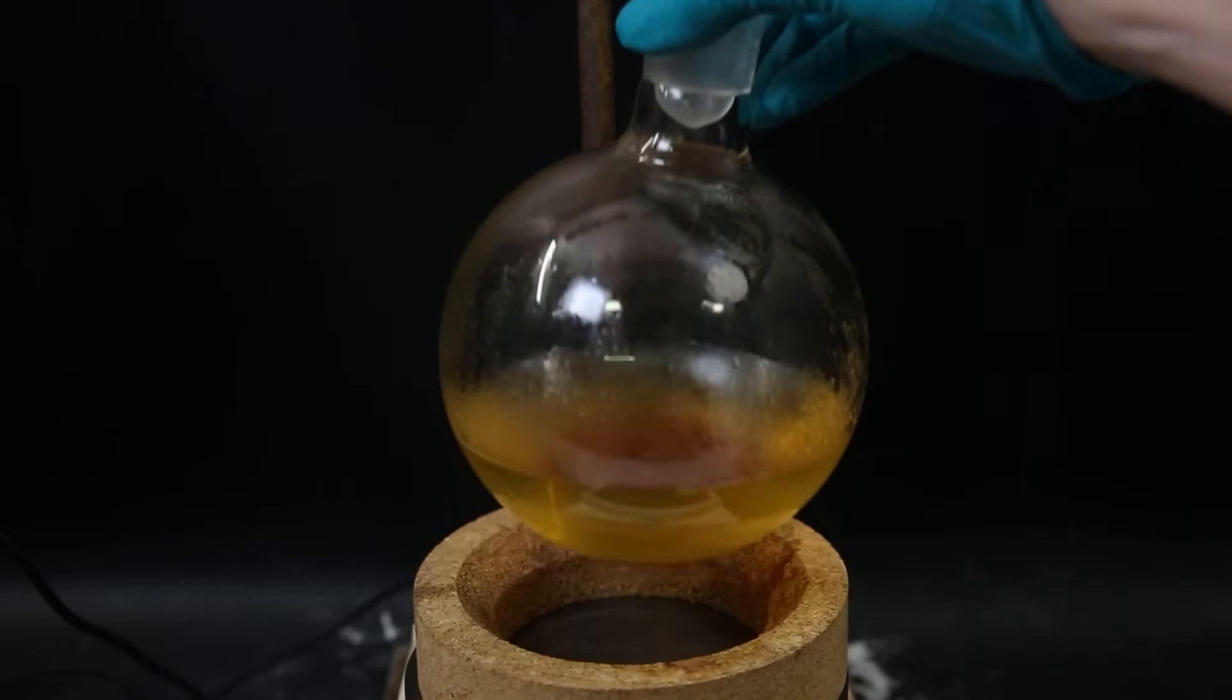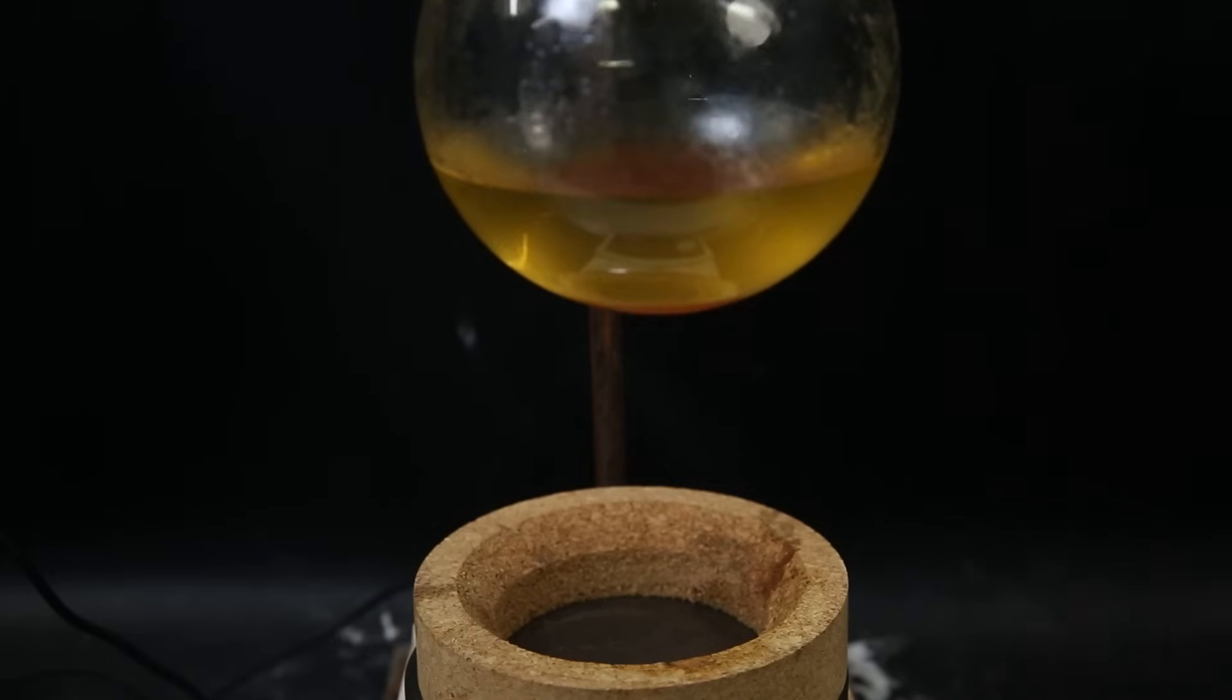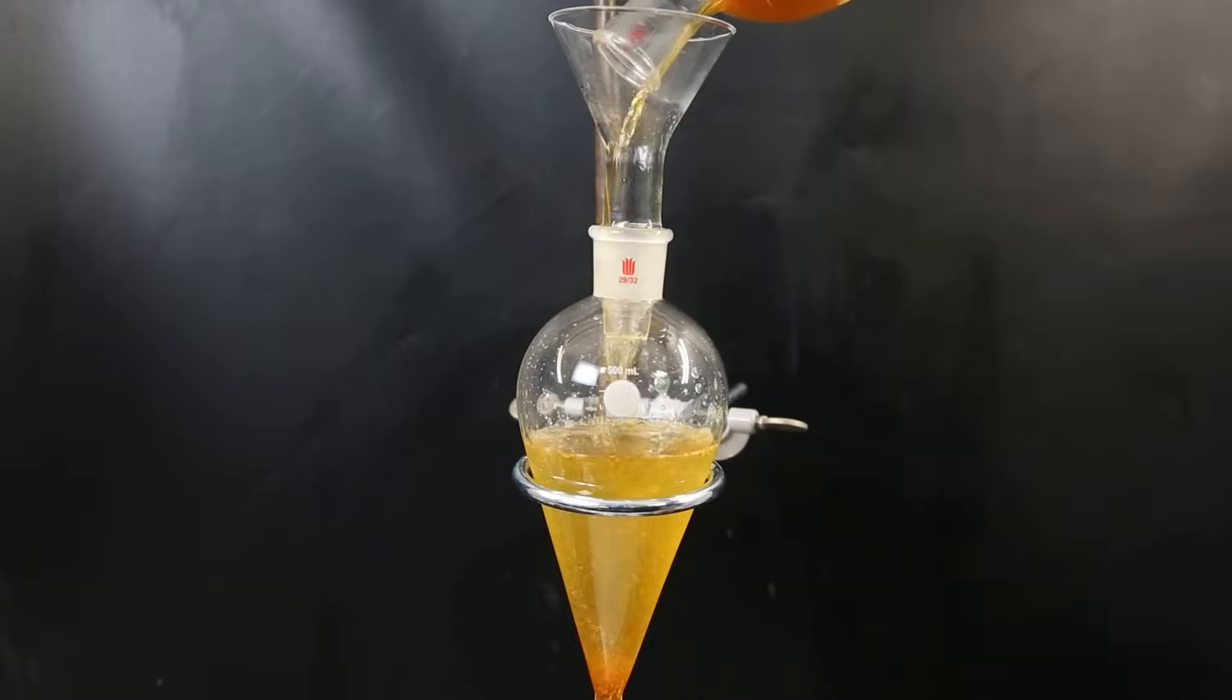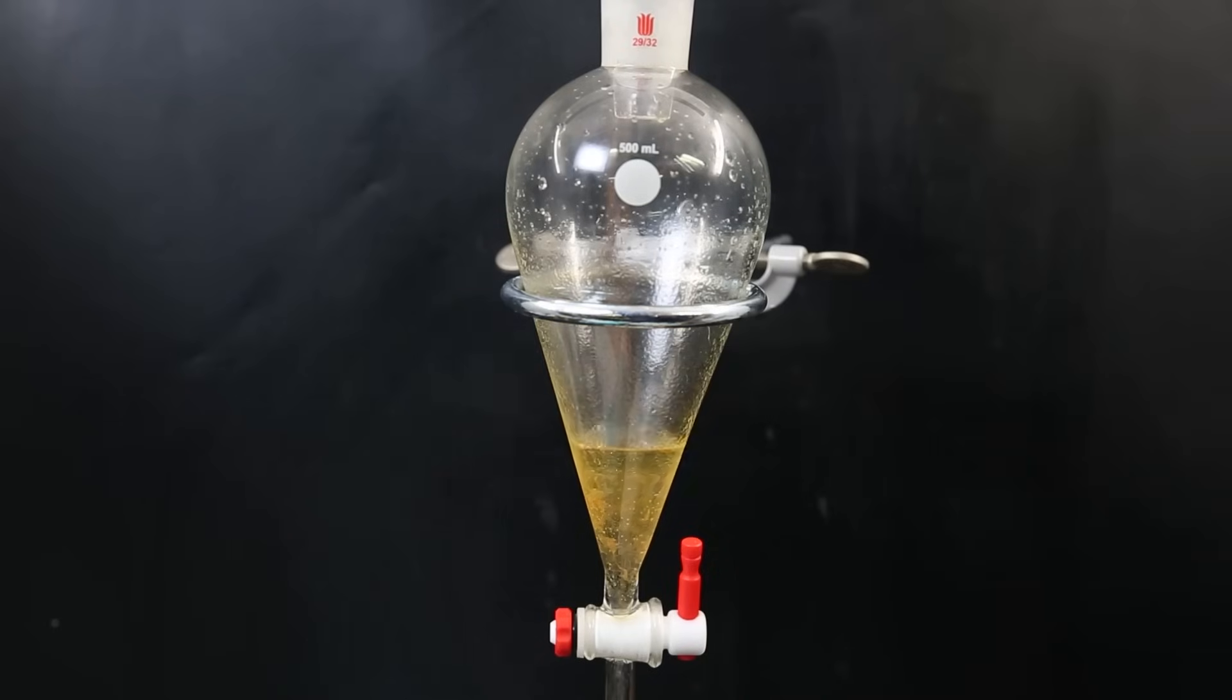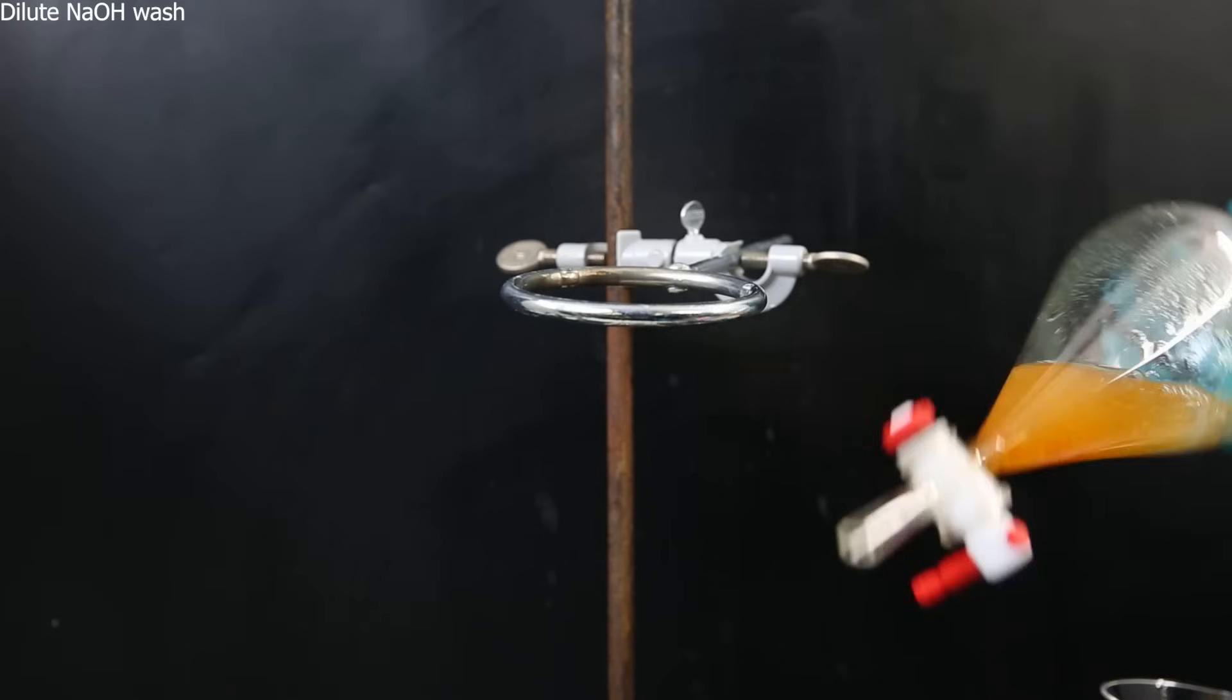Now I am left with a two-layer system with water on top and tetraethyl lead on the bottom, along with some impurities that have managed to come over. I move all of the contents to a separatory funnel and separate the layers. I then pour the tetraethyl lead back in and wash it once with some dilute sodium hydroxide.